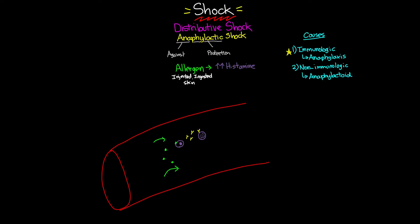Once the allergen enters the bloodstream a second time, it binds to one of the antibodies on a mast cell — this is where the cascade of events begins. First, cytokines are released to recruit white blood cells. When white blood cells and mast cells come together, you get a massive release of histamine. This histamine then binds to histamine receptors: the H1 and H2 receptors, each producing unique responses.